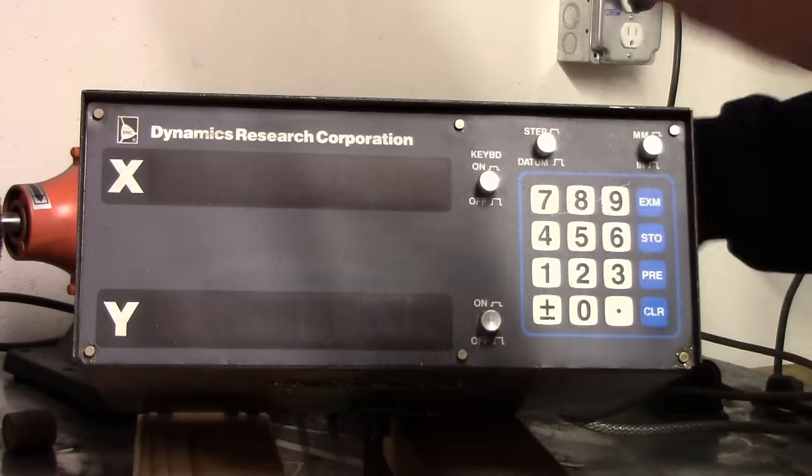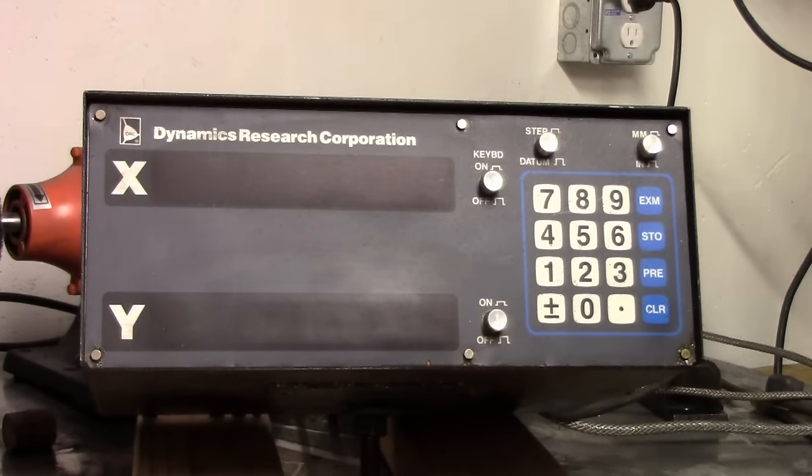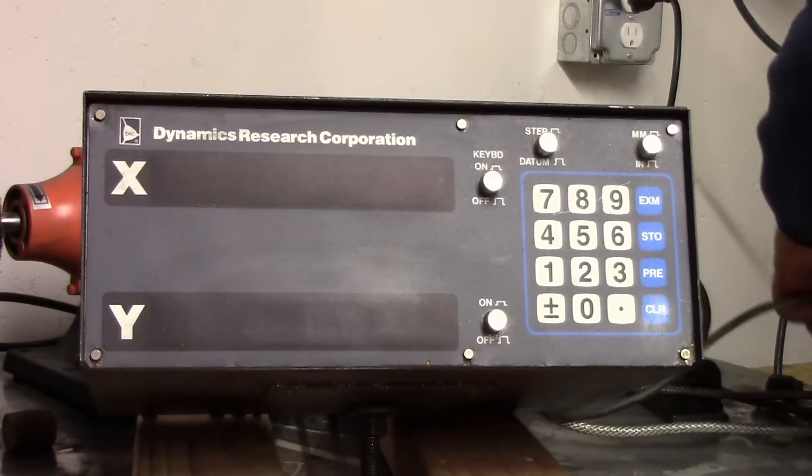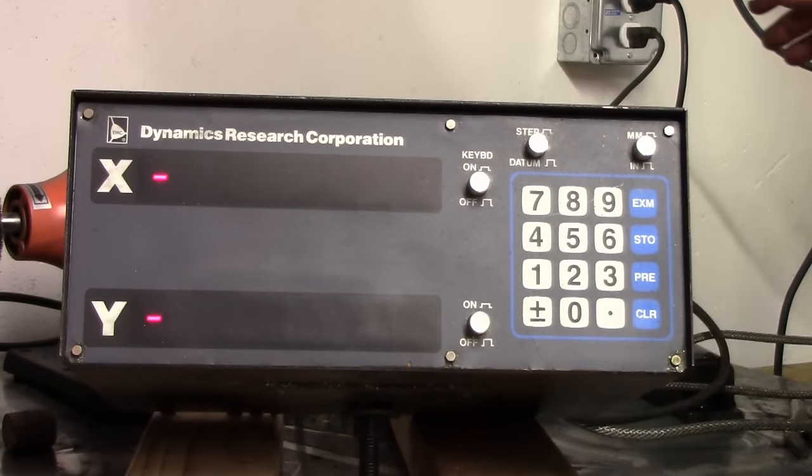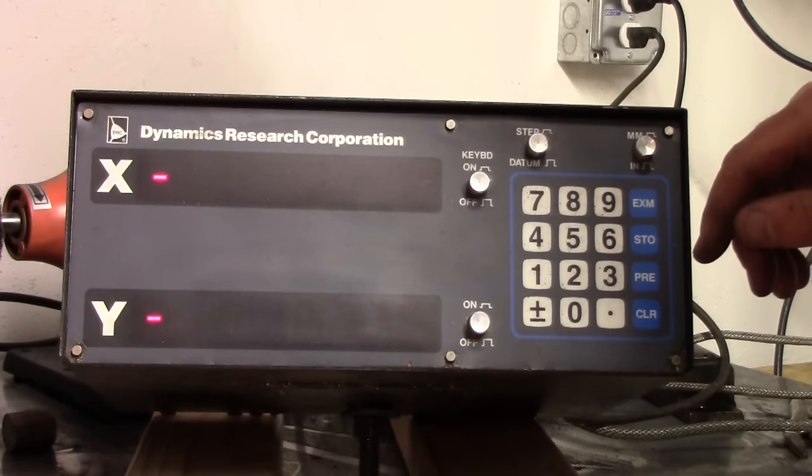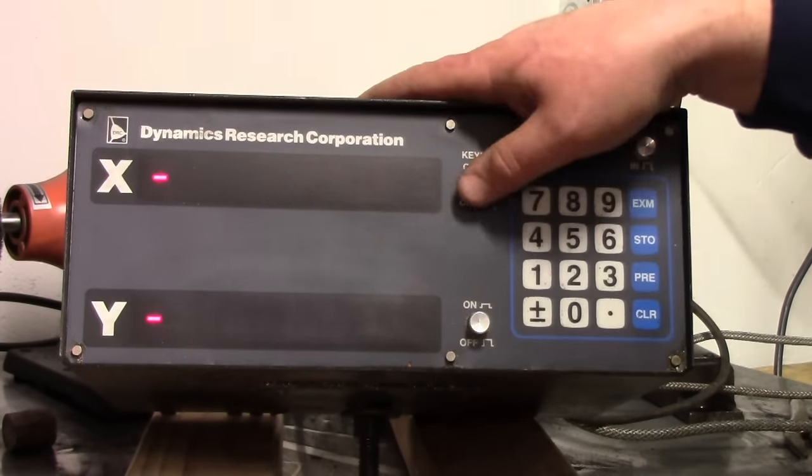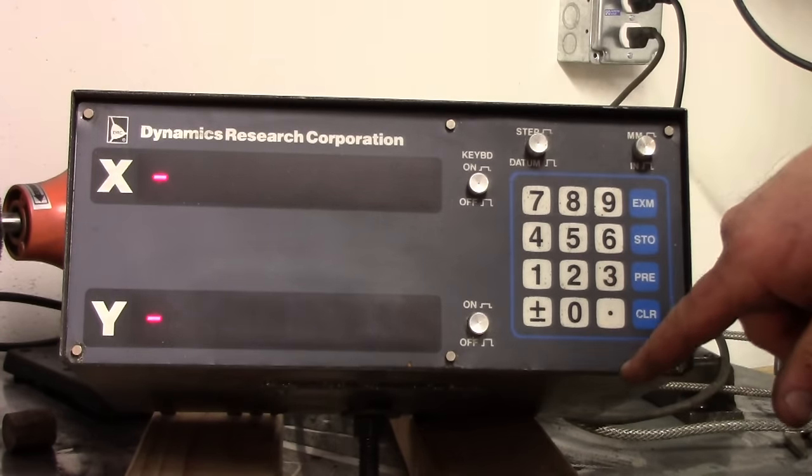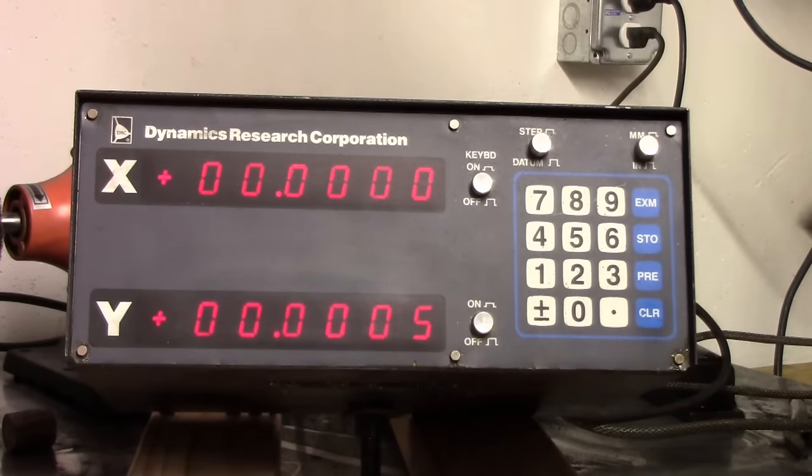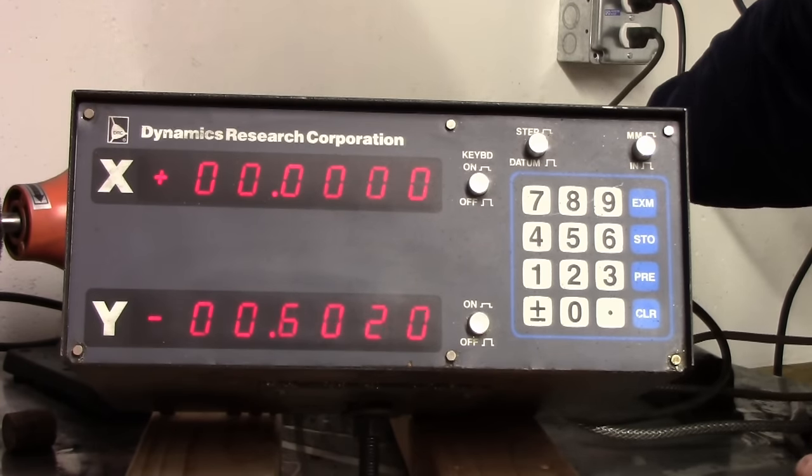So let's plug her in and see if she lights up. Oh, I heard noise. So why are we blank? Keyboard on, axis on, axis on, like clear? Ah! We got numbers.